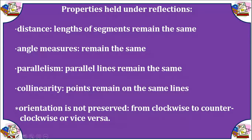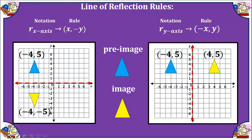Here are some properties held under reflections. The main things are that you have congruent lengths and congruent angles — therefore our shapes are congruent. Here are the rules for lines of reflection. We are going to focus on reflecting across the x-axis and the y-axis.